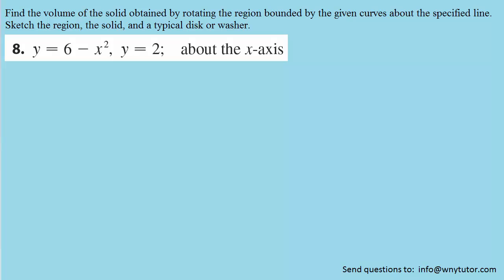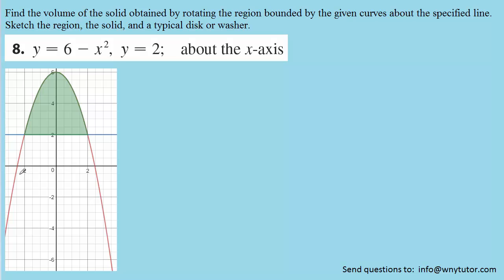Our first step in determining the volume of this solid is to graph the two curves that are given in the question. The graph of y equals 6 minus x squared is this upside down parabola that's colored in orange, and then the horizontal line y equals 2 is shown in blue. We've colored in the region that those two curves enclose in green.